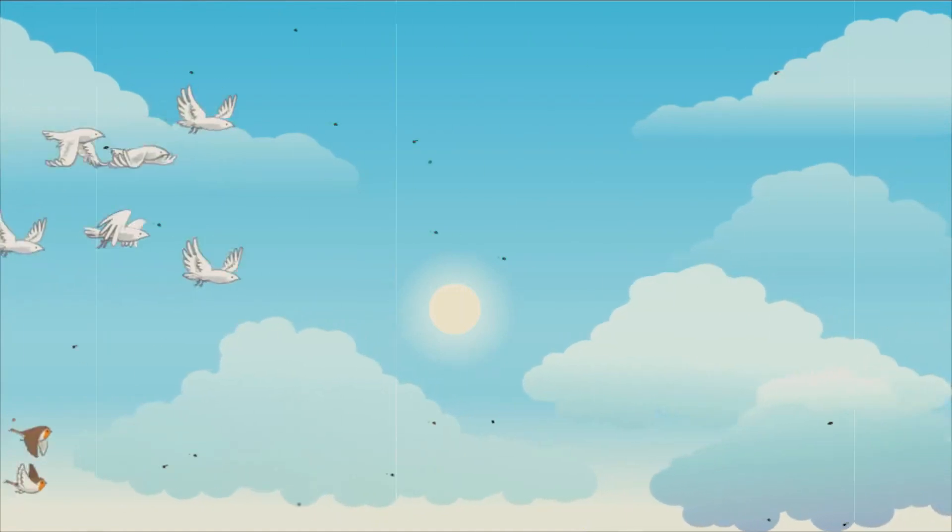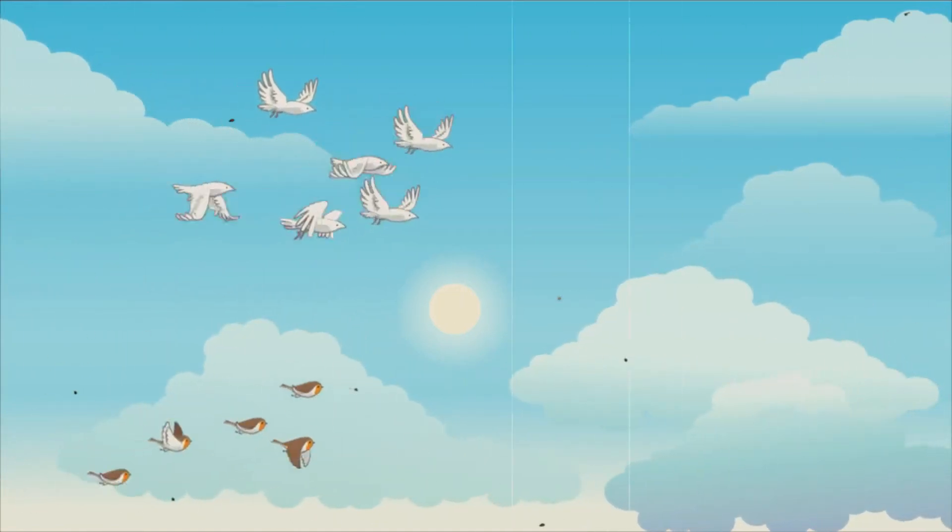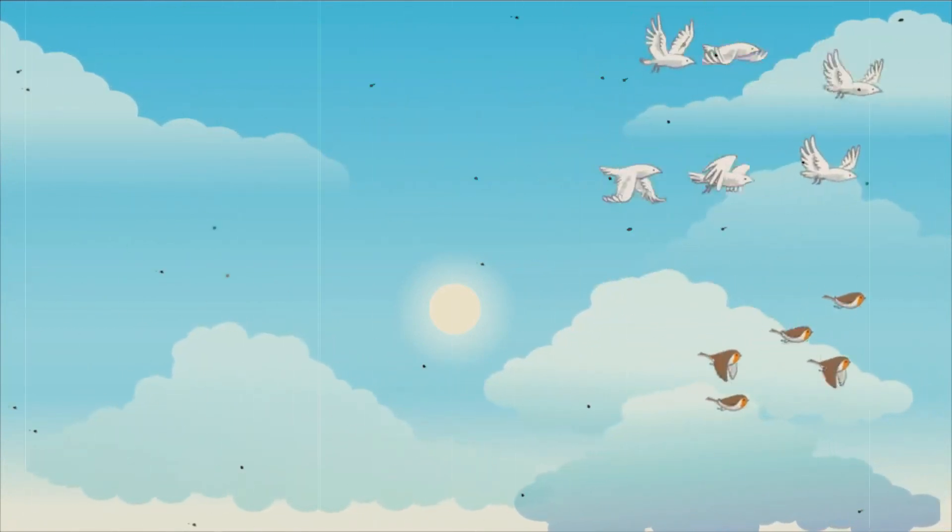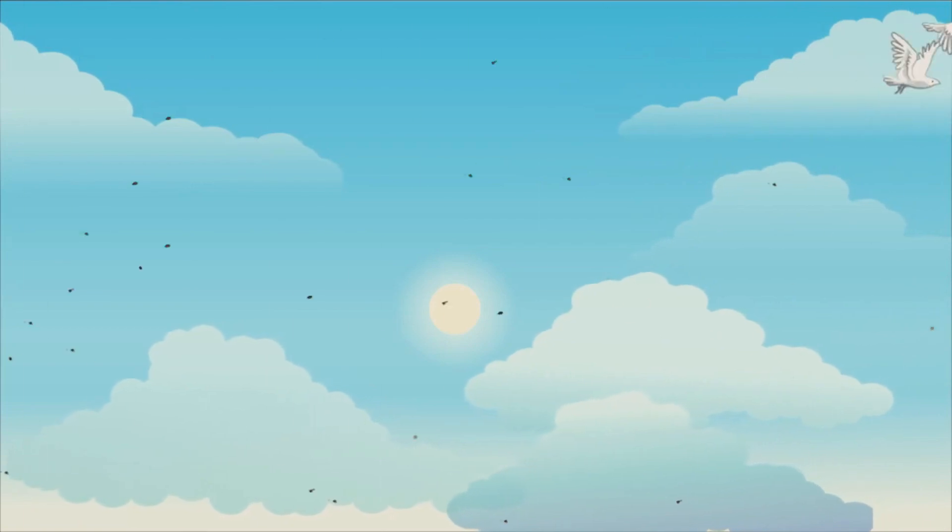Migrating birds usually travel in a V formation when going from one place to another. So in this video we're gonna explain why birds fly in this format and does it really help them.